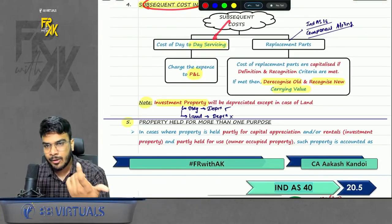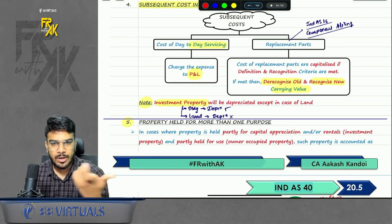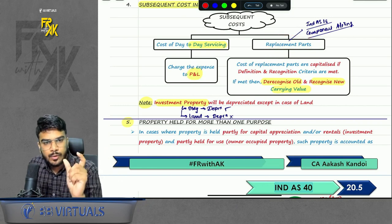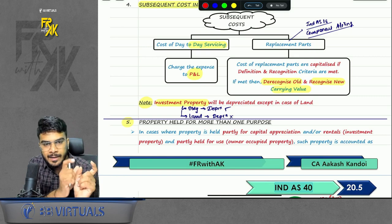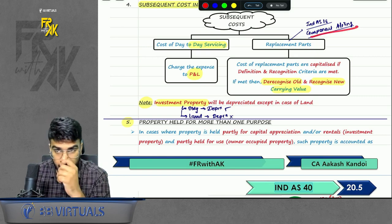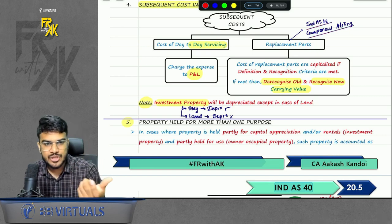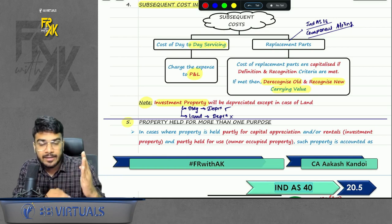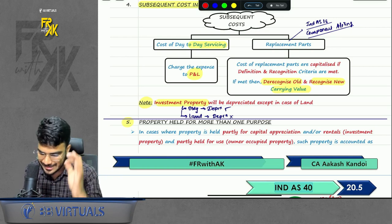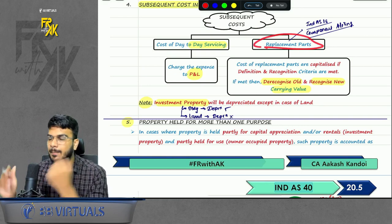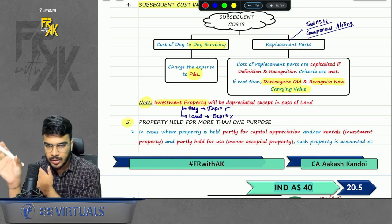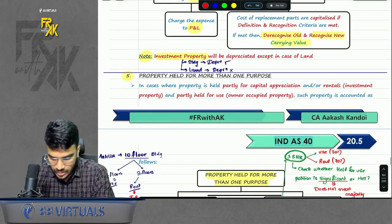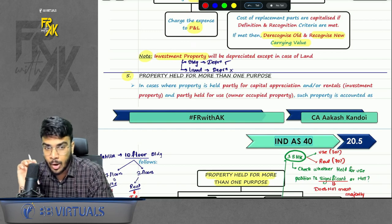Regarding subsequent costs: if you incur any subsequent cost in the nature of servicing or repairs and maintenance, it will be transferred to profit and loss. But if you are replacing any part, you will add the new value of the new part and the old carrying amount of that part will be derecognized. This is just like component accounting in IND AS 16 — for example, replacing an engine: add the new cost and deduct the old carrying amount of the engine.